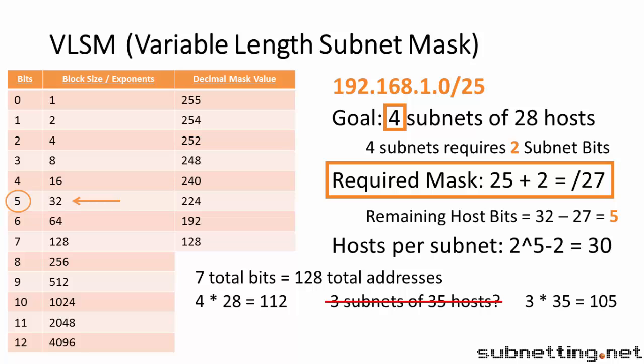So if the question had asked us to create 3 subnets of 35 hosts each, there would be no answer, because this would be impossible with a slash 25 subnet mask. But if we lower the subnets from 3 down to 2, then it would work, because we would gain an extra host bit. And then we would have 64 minus 2, or 62 hosts per subnet available to use.